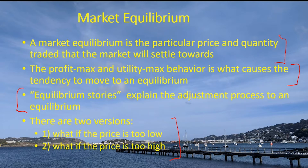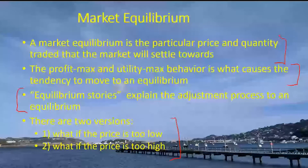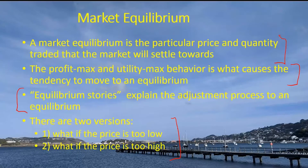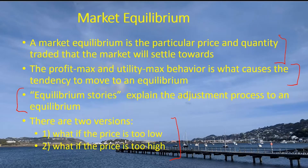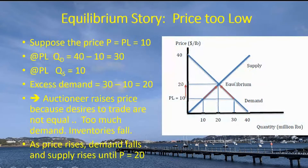There are two versions of the story. We're going to talk first about what happens if the price is too low to be an equilibrium price — that is, we're at a price below the intersection of supply and demand. And then second, we're going to ask what if the price is too high in the market, and think about what would have to happen for the price and quantity to adjust to where supply and demand are equal.